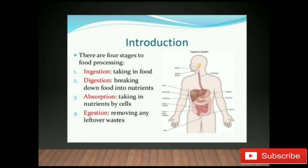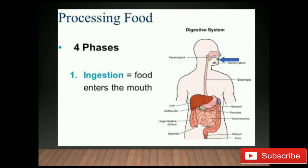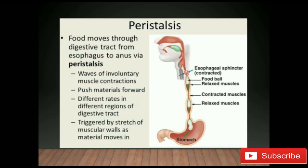The first stage is ingestion. Food enters the mouth and is taken into our body through the mouth. Saliva lubricates the food making it easier to swallow. The tongue helps to roll and push the food into the food pipe or esophagus. Food then moves downwards into the stomach by contraction of involuntary muscles of the walls of the esophagus.